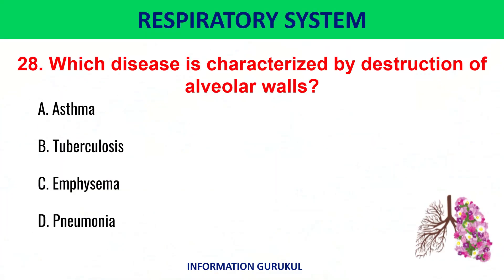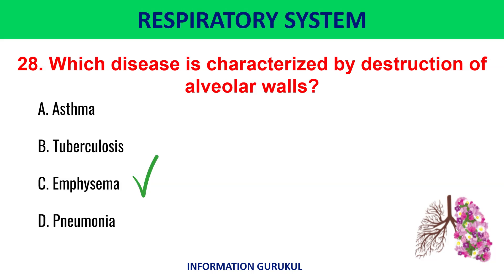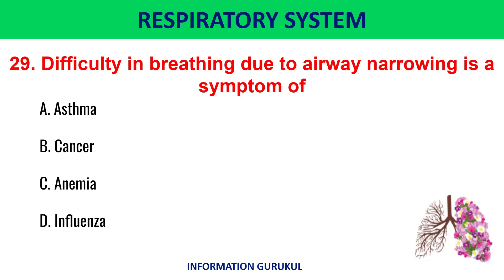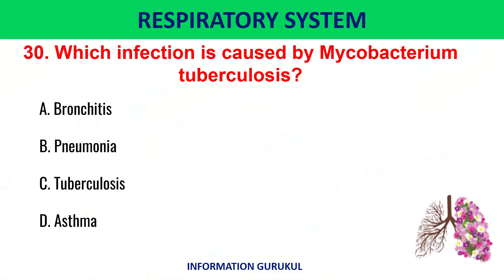Which disease is characterized by destruction of alveolar walls? Emphysema. Difficulty in breathing due to airway narrowing is a symptom of asthma. Which infection is caused by Mycobacterium tuberculosis? Tuberculosis.